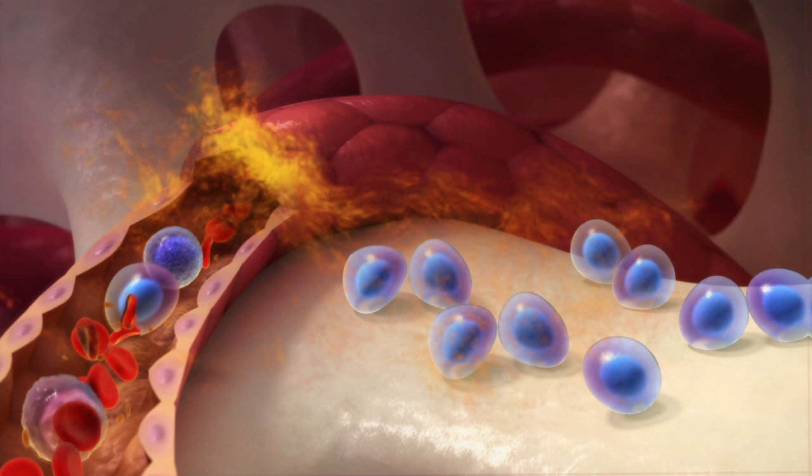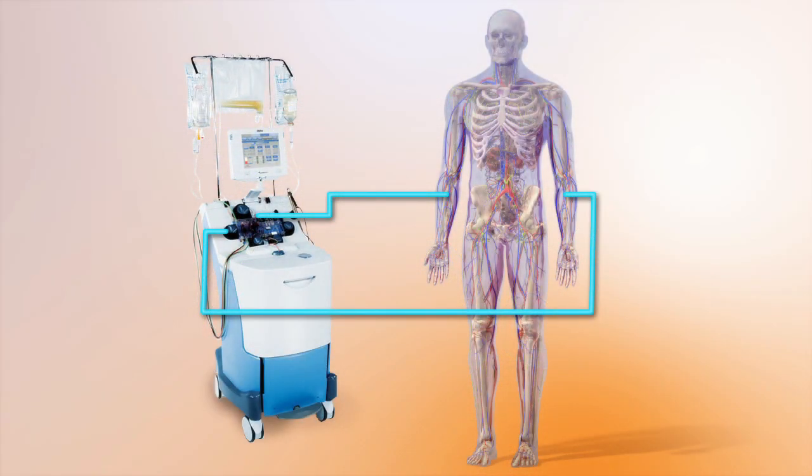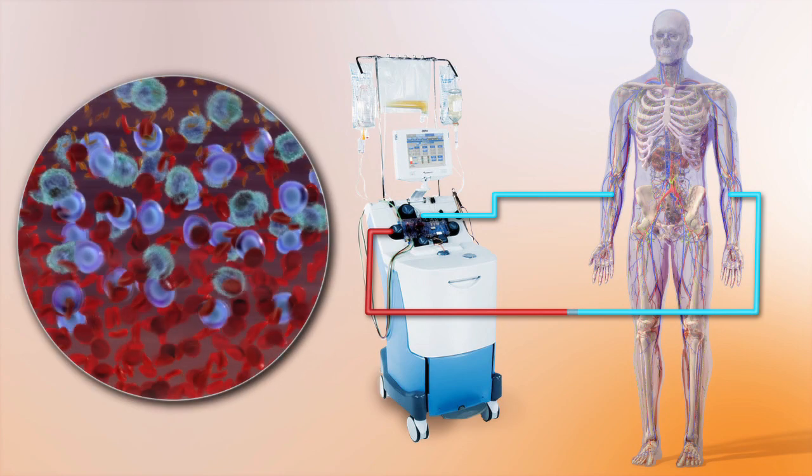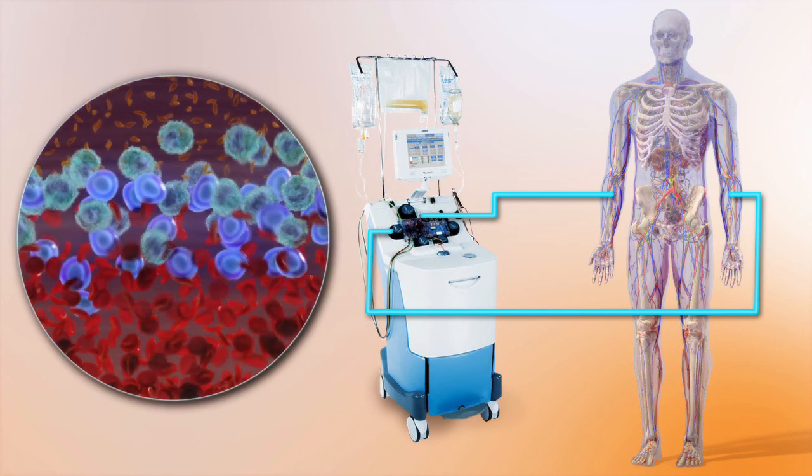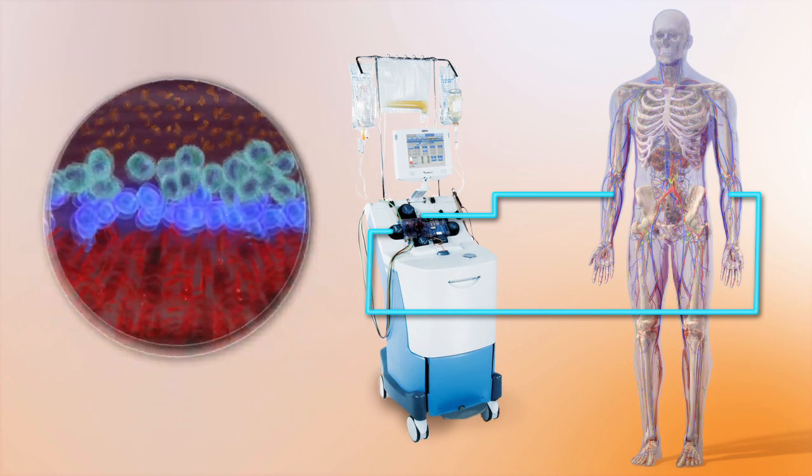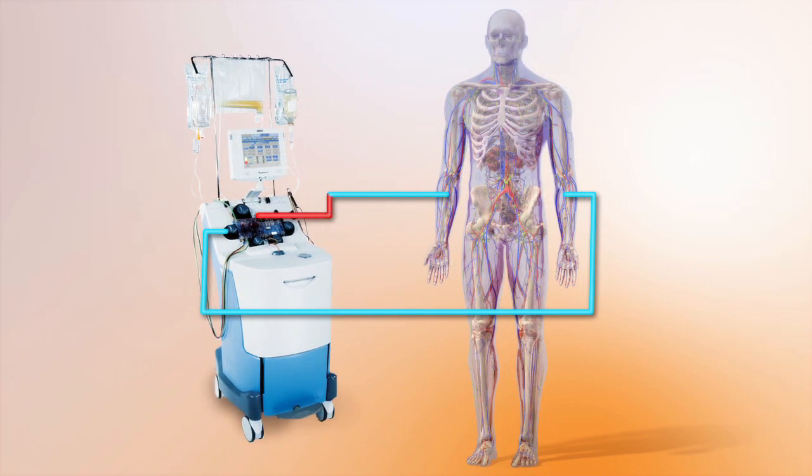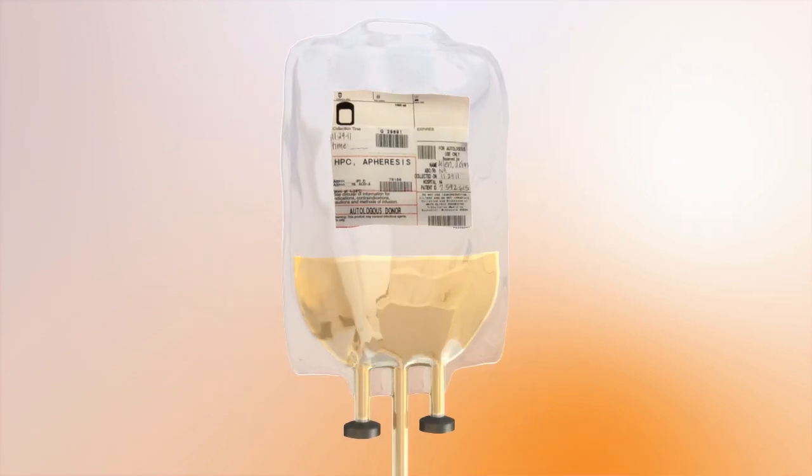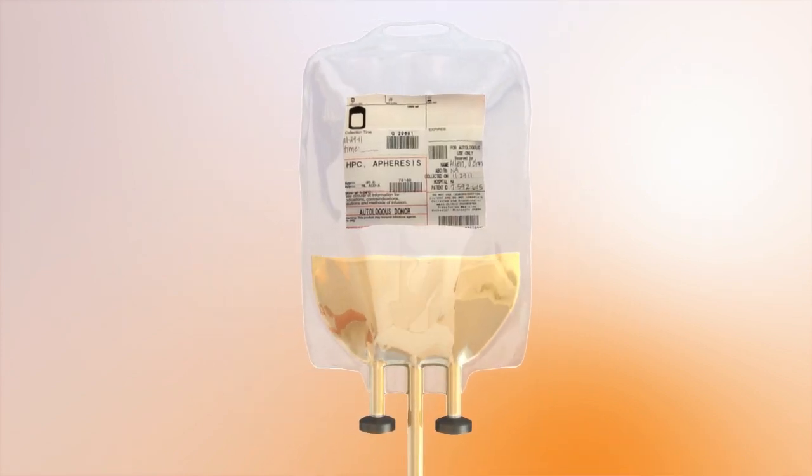Stem cells are collected or harvested by a process called apheresis, in which blood is taken from one arm and passed through a cell sorting machine. This separates out the stem cells, and the remaining blood is returned into a vein in your other arm. The harvested stem cells are mixed with a preservative and then frozen in liquid nitrogen until the time of your transplant.